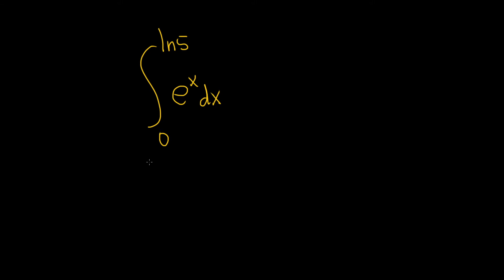E to the x is really easy to integrate because you just get e to the x. So here we integrate it and we write e to the x. Now because it's a definite integral — in other words we have these limits of integration — we don't have to worry about writing the plus c because it would end up canceling when we subtract anyway. So typically you don't write it.